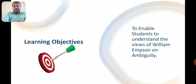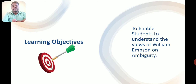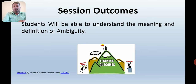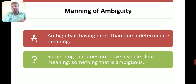The learning objective of this particular session is to enable students to understand the views of William Empson on ambiguity. The session outcome will be that you will be able to understand the meaning and definitions of ambiguity after the discussion. So, what is the meaning of ambiguity?